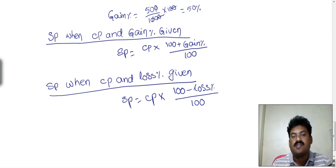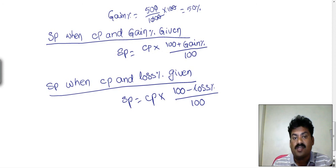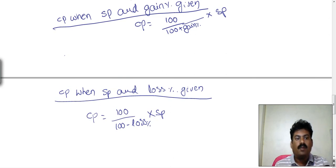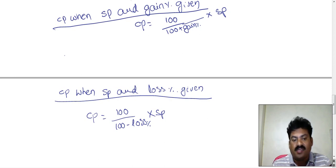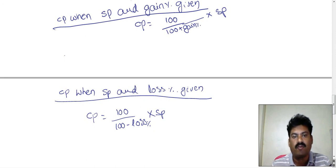To find the cost price when selling price and gain percentage are given, the formula is: CP equals 100 divided by (100 plus gain%) multiplied by selling price. If selling price and loss percentage are given, the cost price is found using: CP equals 100 divided by (100 minus loss%) multiplied by selling price. These are the key formulas required to solve profit and loss problems.